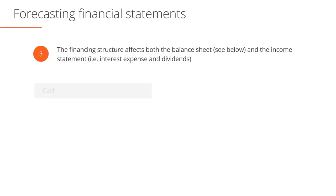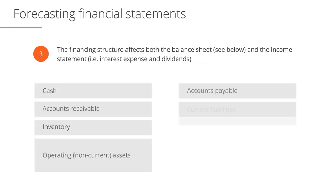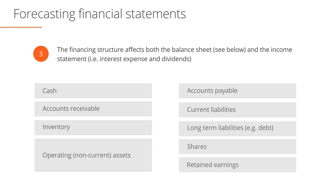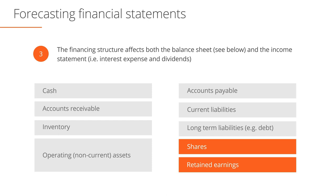Forecasting the finance structure impacts both the balance sheet and the income statement. Forecasting equity requires forecasting stock issuance and stock repurchases, as well as forecasting changes in retained earnings. Retained earnings changes will be largely driven by our forecasted net income and dividends. When forecasting retained earnings changes in our model, we will complete a Retained Earnings Supporting Schedule section, much like we used a note to forecast PP&E in the previous module.